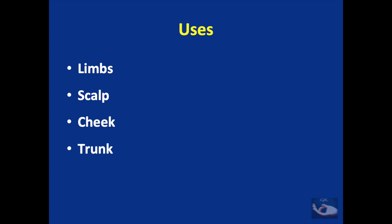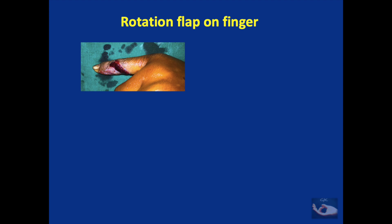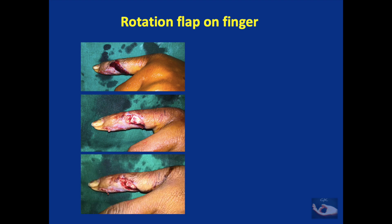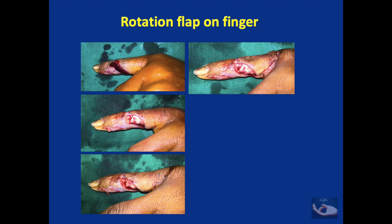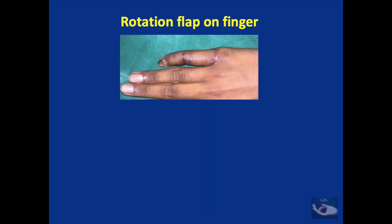The rotation flap can be used on any part of the body provided the defect is small and there is adequate, intact, and elastic skin surrounding it. When planning a rotation flap on the limbs, it is ideal to include the deep fascia to enhance vascularity. It can also be done on the fingers — as in this patient with a grinding machine injury on the little finger. After debridement, the wound was almost triangular in shape. The rotation flap was marked based on the intact ulnar side of the finger, raised, rotated into the defect, and the flap healed well. Local flaps are advantageous on the fingers for regaining quick function.